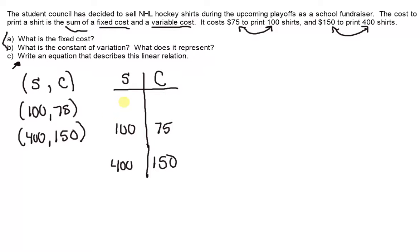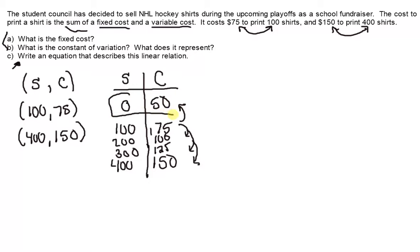If we did a little bit of patterning, going 0, 100, 200, 300, and then 400 — if we went from 75 to 150 but went up one, two, three times, we would have 75, 100, 125, 150. So if we pattern down from 75, we would get 50. In a table of values, we can always identify the fixed cost because when S equals zero, the dependent variable C gives us our starting cost. So our fixed cost is $50.